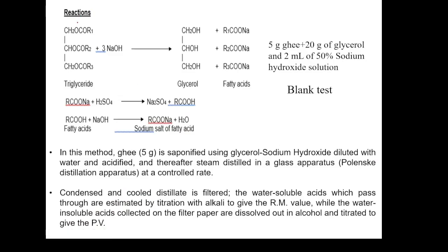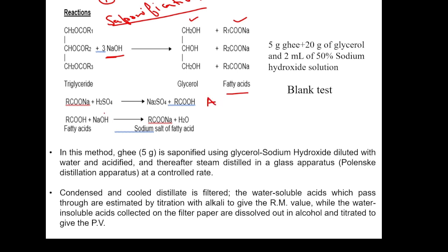The RM value determination can be divided into steps. The first step is saponification, where the triglyceride is treated with alkali — using sodium hydroxide we get the sodium salt of the fatty acid. This yields glycerol and soap formation. The second step is acidification, where sulfuric acid is added so that the corresponding fatty acids are released. The third step is titration of the steam volatile water-soluble fatty acids in the distillate using alkali.